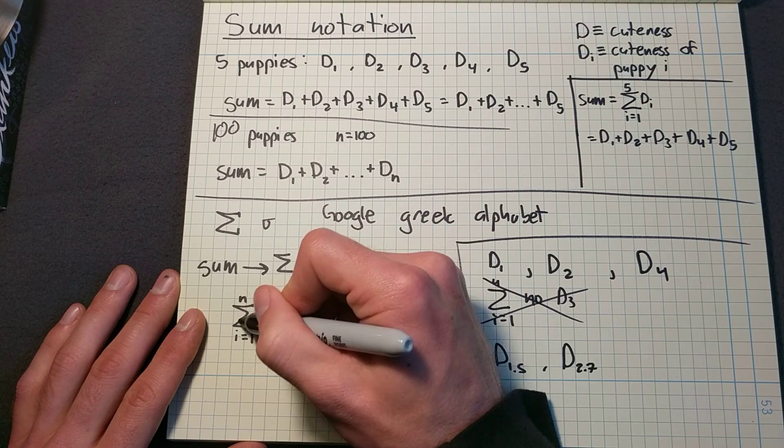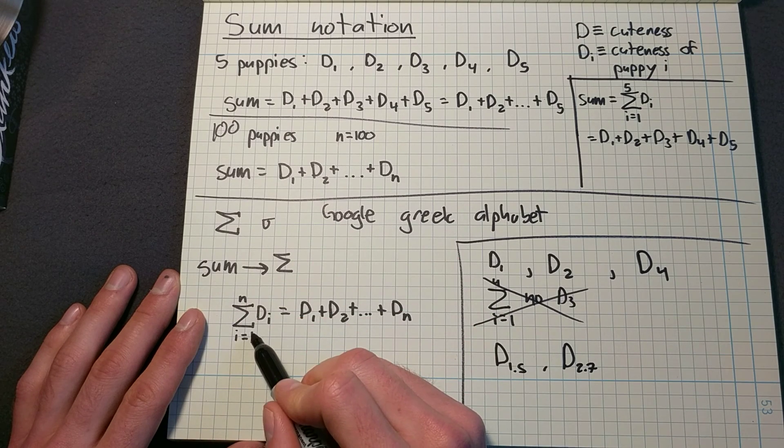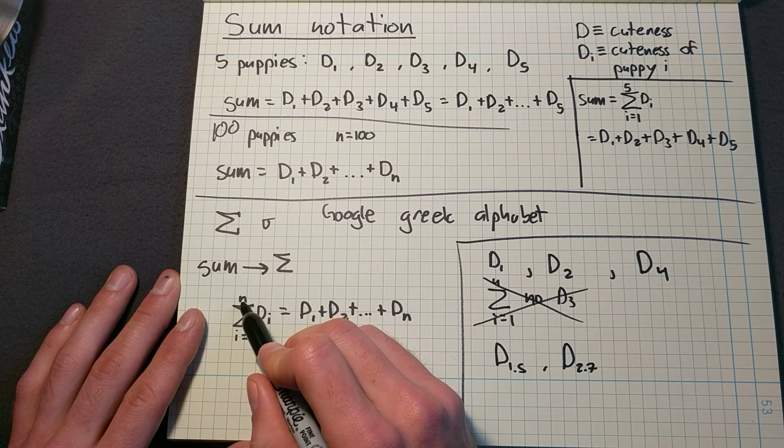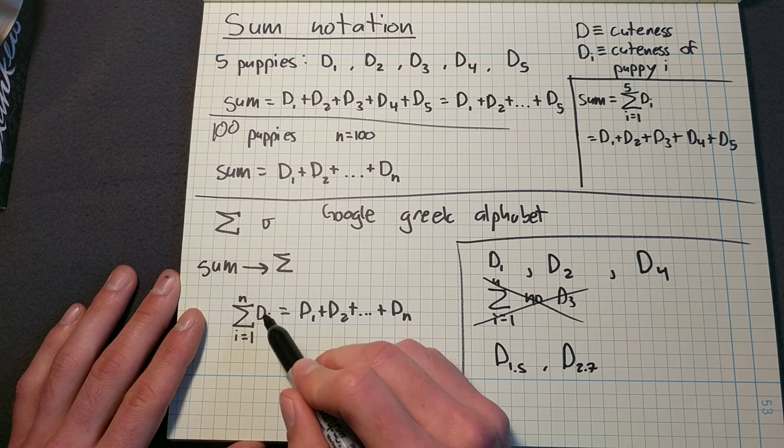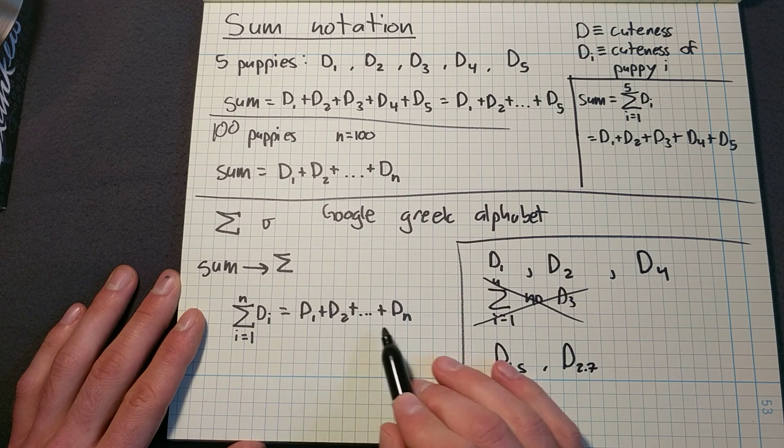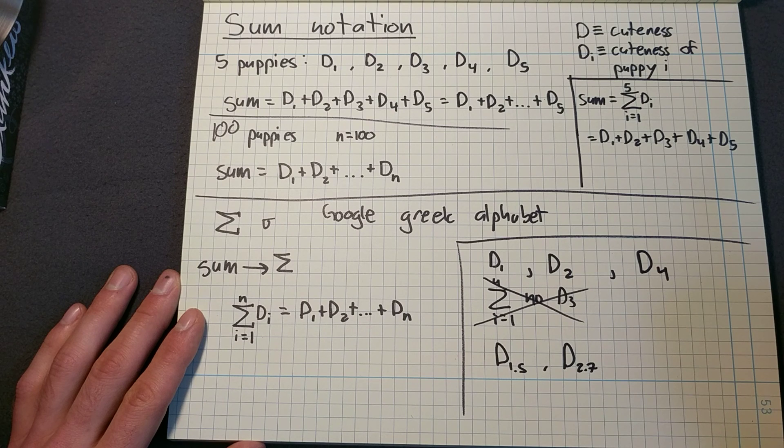So sum notation, sigma from I equals one up to I equals N of D I, is equal to this here. That's it. Thank you.